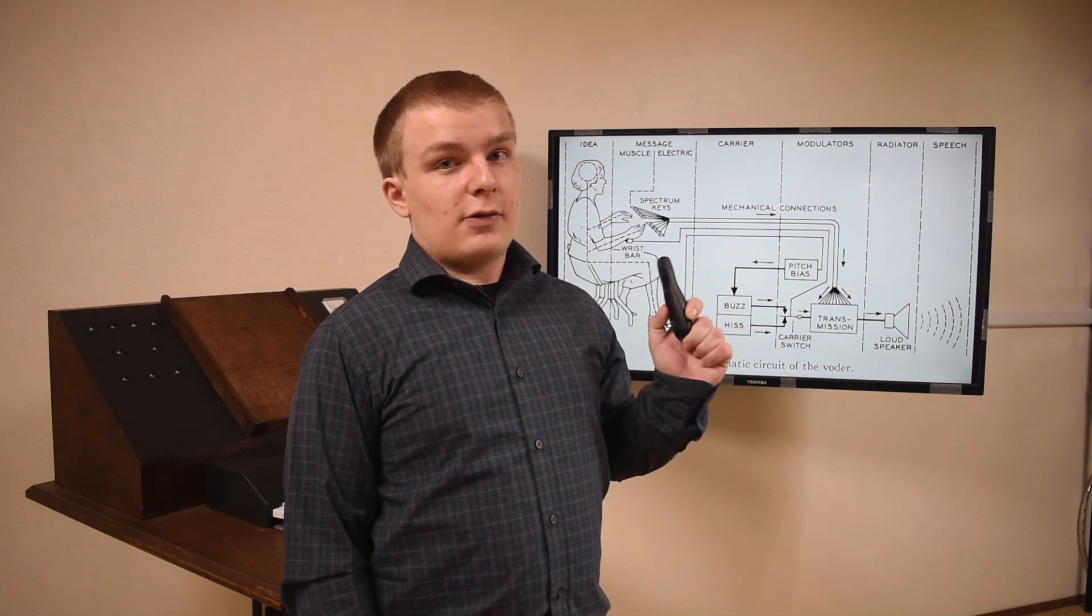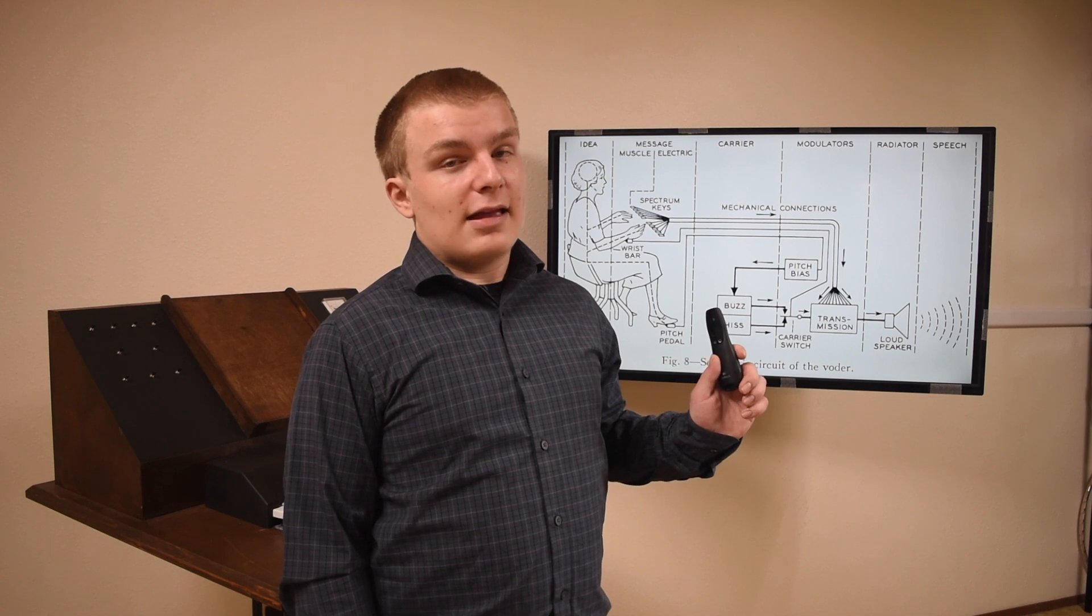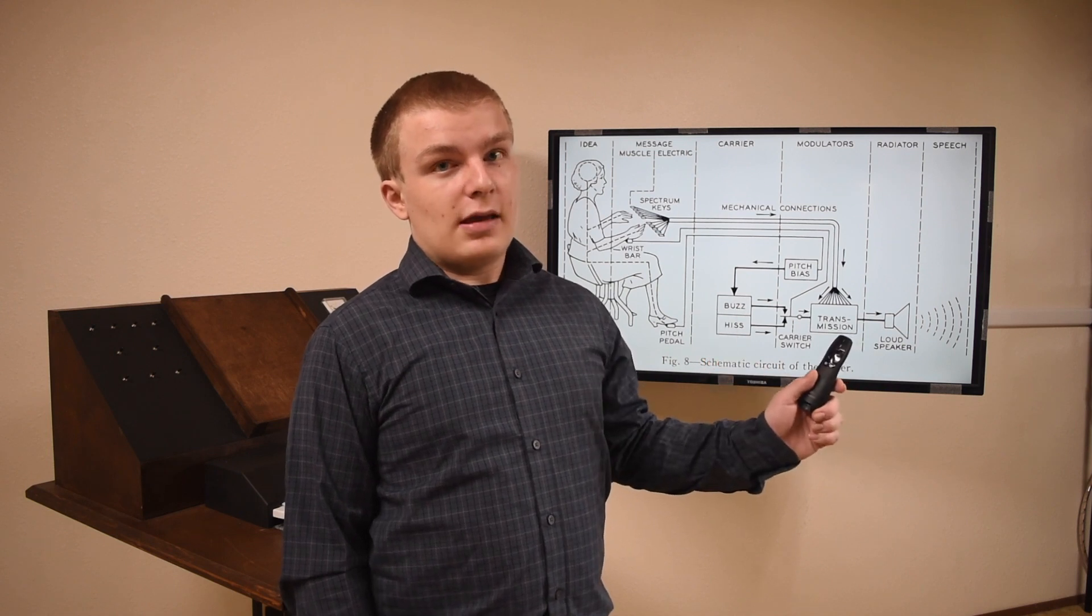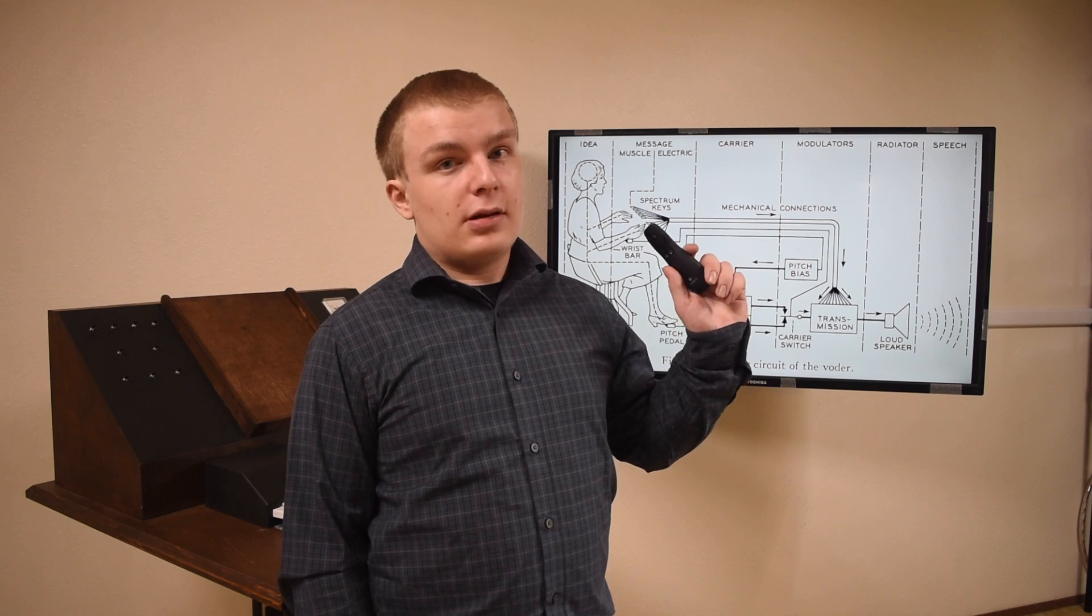This is a block diagram of the Voter. As you can see, the speech begins at the operator's fingers, where they use the wrist bar to select between the voiced and unvoiced, or hiss and buzz, noise sources. This sound is then transmitted through a bank of filters, each of which is controlled by one of the ten keys on the keyboard. The sound is then output through a loudspeaker.